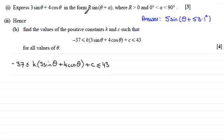Now, it says hence, so it must have something to do with this particular question here. And it does because this part inside the brackets, we can see, is represented as 5 sine of theta plus 53.1 degrees. So, if I multiply this with the k, what I'm going to have is going to be 5k sine of theta plus 53.1 degrees. And then I'm going to add the c, and this value here lies between minus 37 and 43, inclusive.